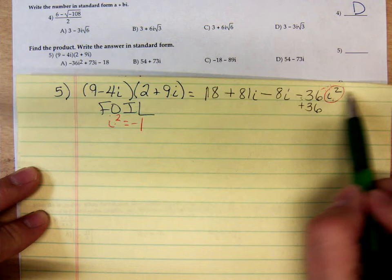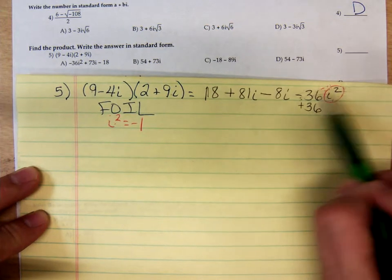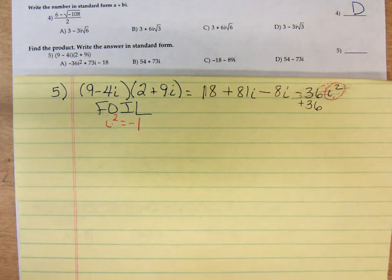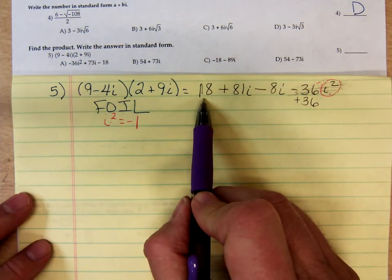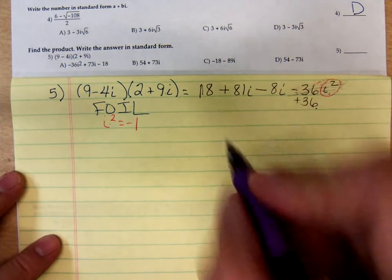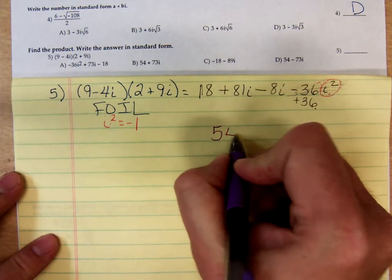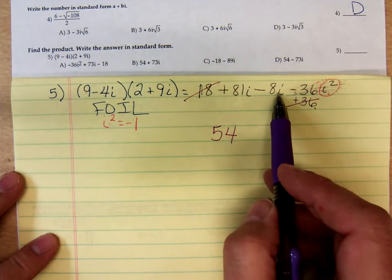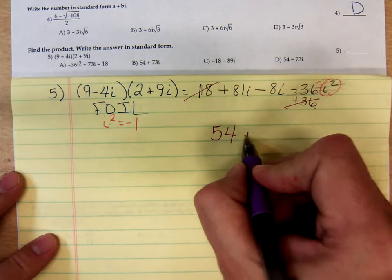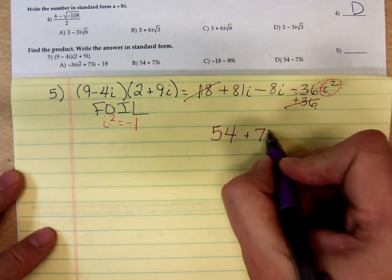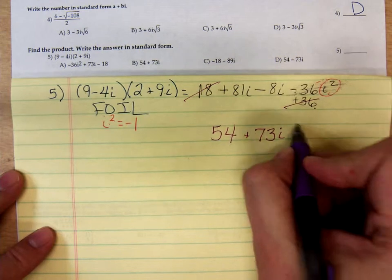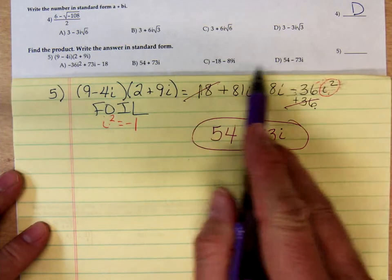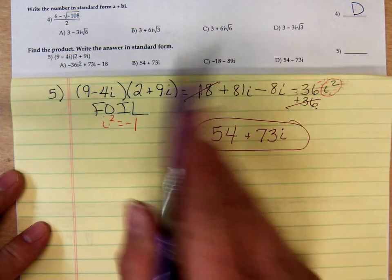So that's what we're going to use now and combine the like terms. So combining the like terms, we have 18 plus 36. That would be 54. Let's see. 81i minus 8i. Is that 73i? 83i. So we have 54 plus 73i. That would be B.